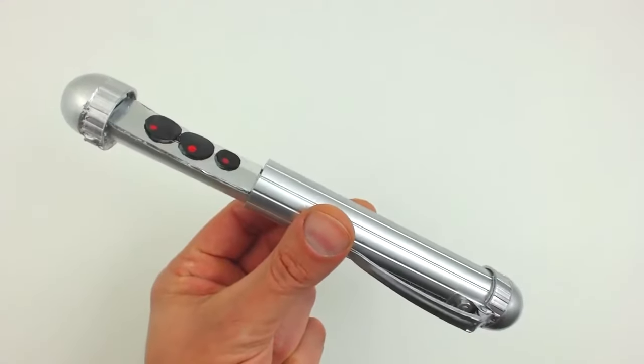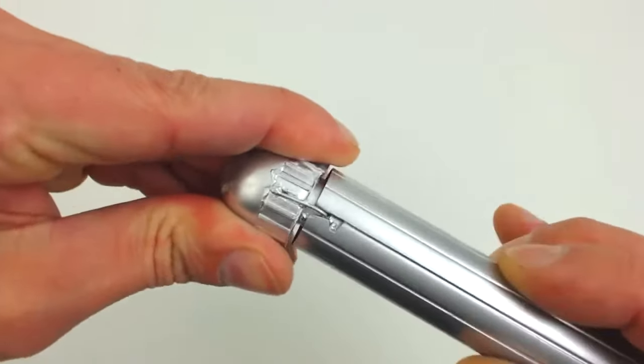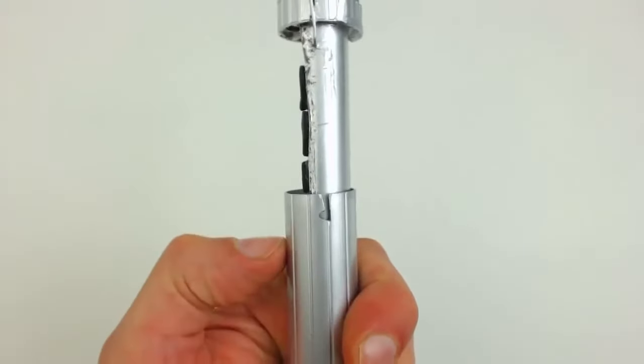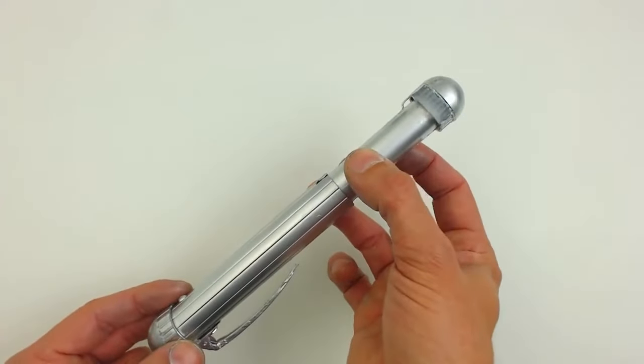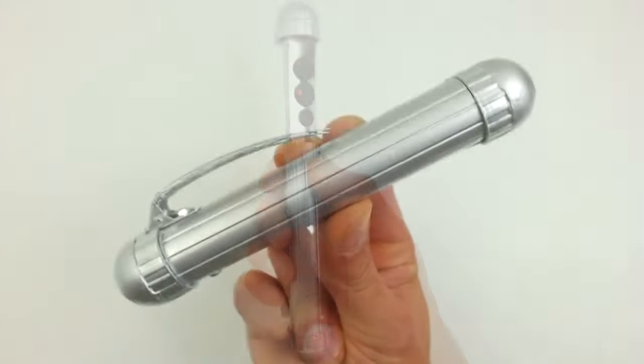Today in CreativeMind's channel, we will teach you how to make a neuralyzer. This is the pen-shaped device used by men in black that emitted a flash of light that erased people's memory for a specific period of time. We can build this device and become a real man in black.